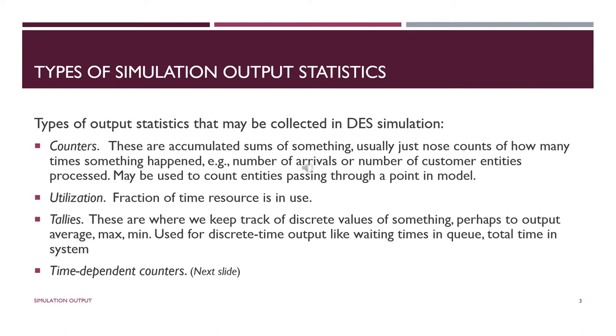Utilization is used the same way as in other areas—it's the fraction of time that a resource is in use. One minus that would be the fraction of time the resource is idle. Tallies is where we keep track of discrete values of something, so for example times in queue. Each customer has a waiting time in queue. If we want to generate an average, we have to sum those and divide by the number of customers at the end of the whole run. Not so terrible.